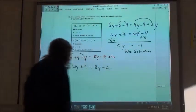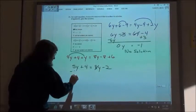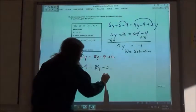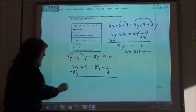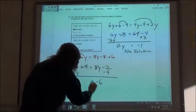And the 8y becomes a negative 8y. Your 4 plus positive 4 becomes a negative 4. It should be negative 6 and a minus 3y.